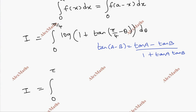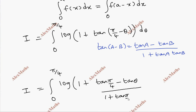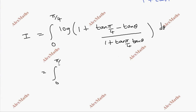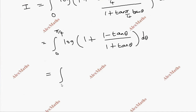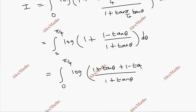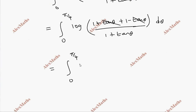So I equals integral from 0 to π/4 of log of 1 plus (tan(π/4) minus tan θ) divided by (1 plus tan(π/4) tan θ), dθ. Since tan(π/4) equals 1, this simplifies to integral from 0 to π/4 of log(2 divided by (1 plus tan θ)) dθ.